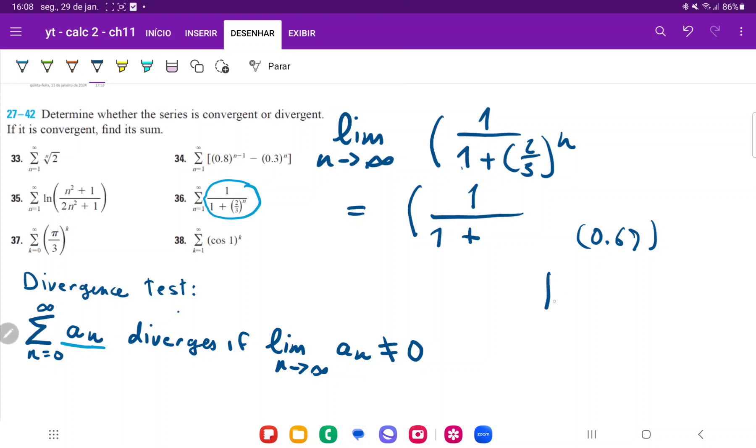So 2/3 is going to be less than 1, therefore 2/3 raised to the power of infinity, that's going to go to zero if we take the limit.